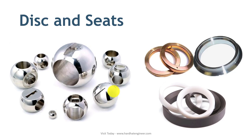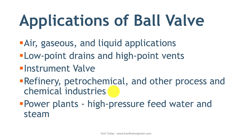Now let's look at the applications of the ball valve. The ball valve can be used in air, gaseous, and liquid applications requiring bubble-tight shutoff. It can be used in low-point drains and high-point vents, and also in instrumentation. The ball valve is regularly used in refineries, petrochemical and other process and chemical industries. It is also used in power plants that handle high-pressure feedwater and steam. It is essentially a universal-use type of valve that provides bubble-tight shutoff.